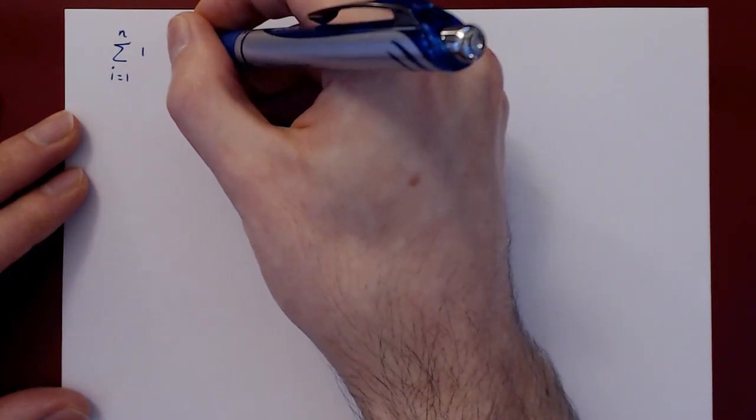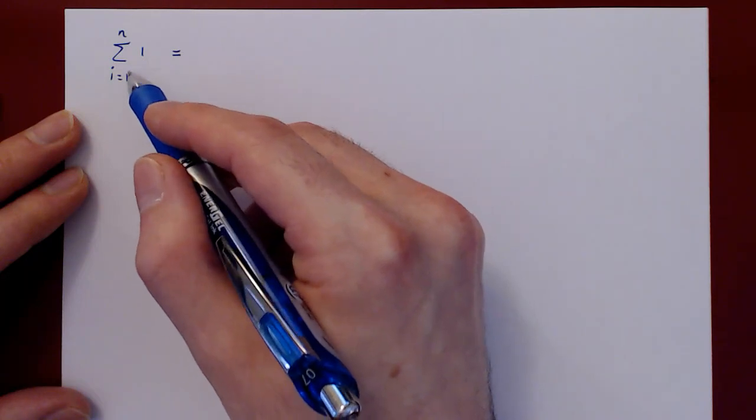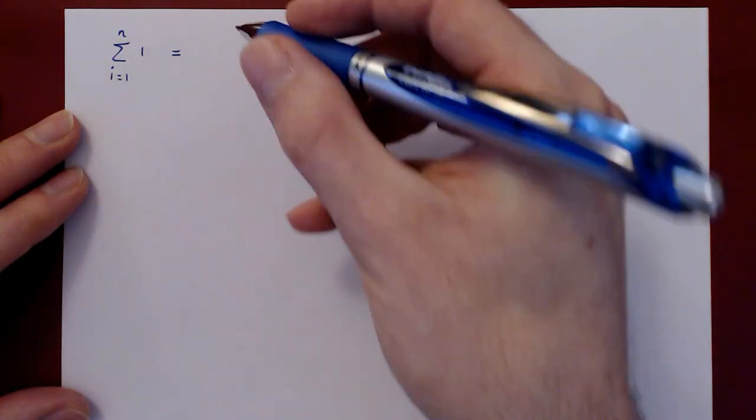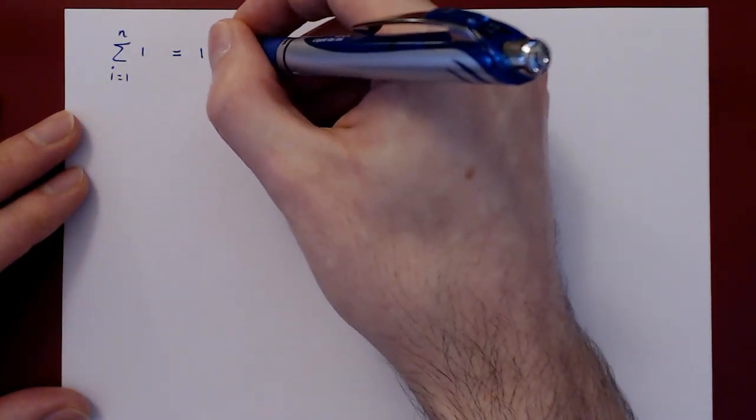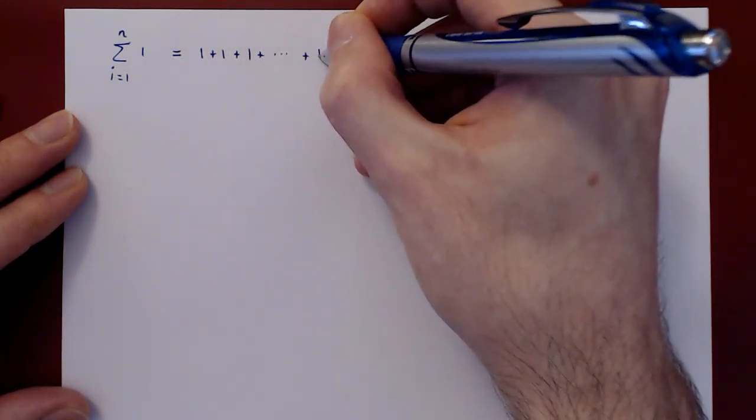So let's expand that sum. As i ranges from 1 to n, 1 is always 1. So this is 1 plus 1 plus 1 plus dot dot dot plus 1.